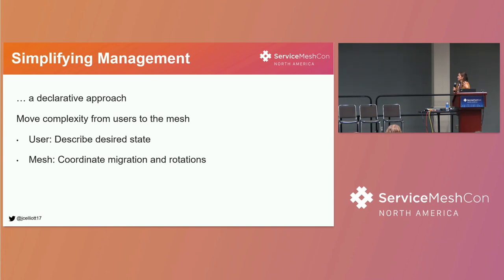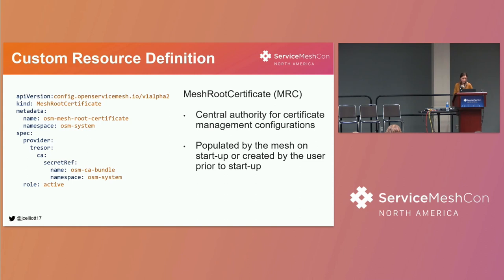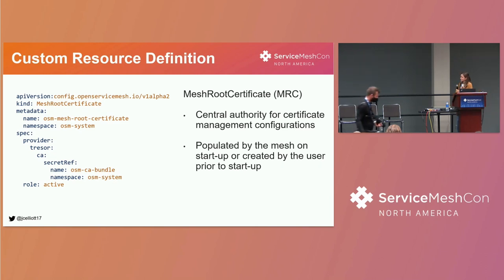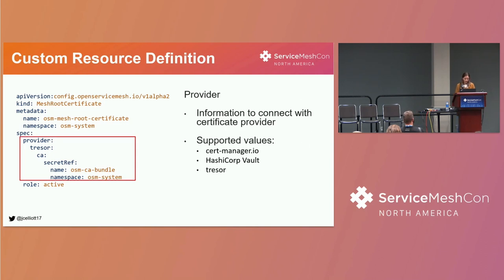So how does OSM support users communicating this desired state? We created a custom resource, the mesh root certificate or MRC, which you can see on the left of the slide, to help centralize certificate management specifications. This resource is either created by the mesh on startup using user-provided settings on install, or it's created by a mesh operator prior to install. The provider field in the MRC contains information about the certificate provider the mesh will communicate with to issue certificates. OSM currently supports CertManager, HashiCorp Vault, and our internal self-signed CA, which is Tressor.